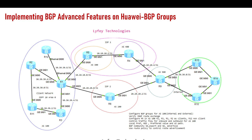Instead of doing configurations on every individual device, you apply common configurations at the group level. You can create two types of groups: internal groups or external groups. If you don't specify that it's an external group, it will be internal by default. You can then go ahead and assign routers — for example R11, R2, R12, R3 — to the group, and they will inherit the group's configurations. In our network for BGP groups, we'll be implementing this in AS 100.